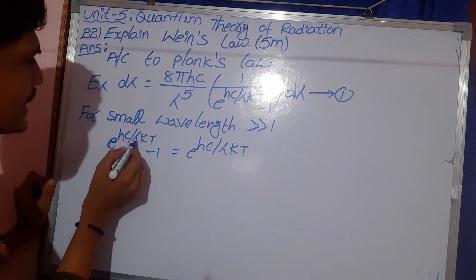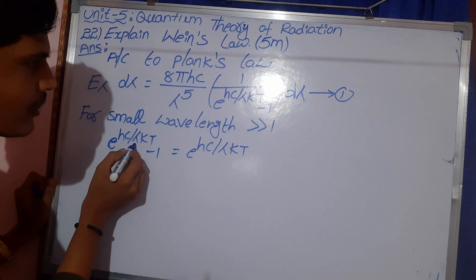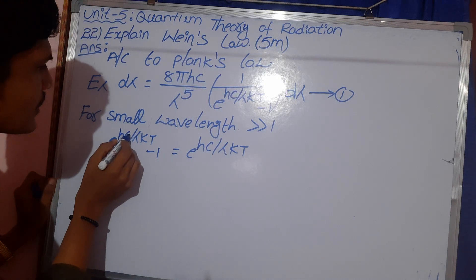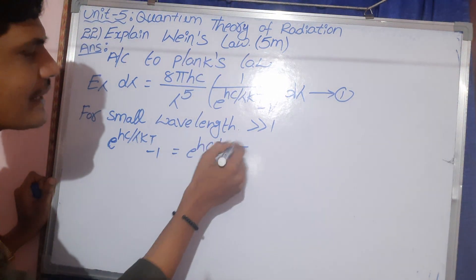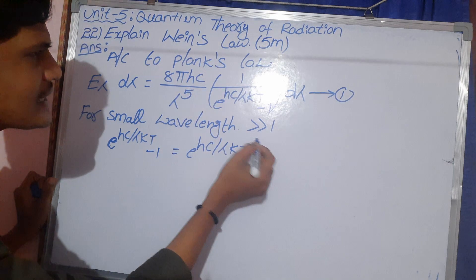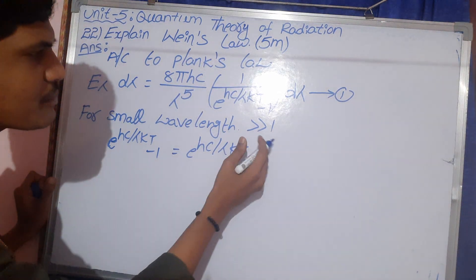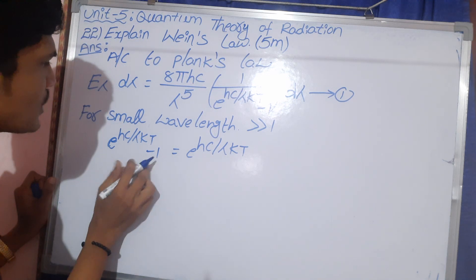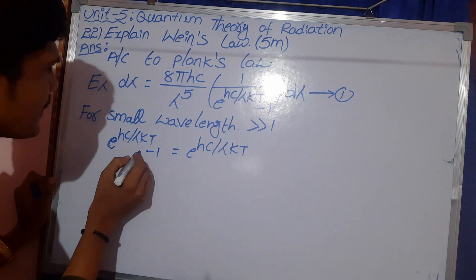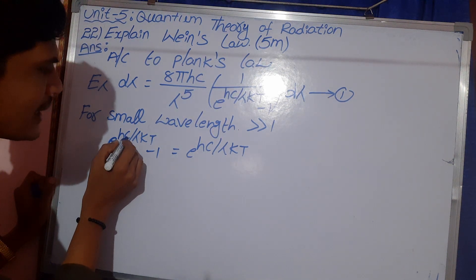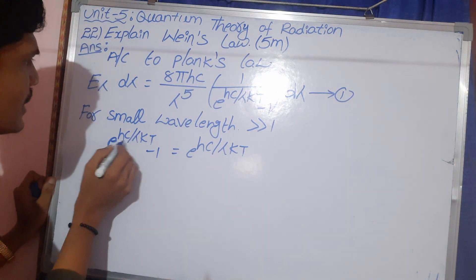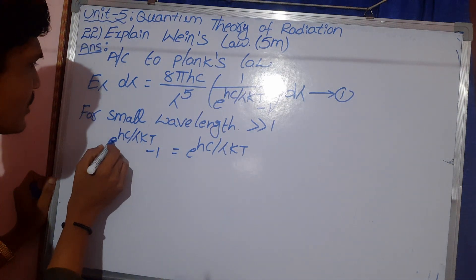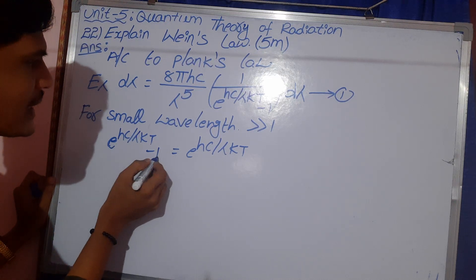But lambda value is E power. E power 0 is 1 equal to 0, so 1 minus 1 equals E power 0. So, this is 1 minus 1 is 0.